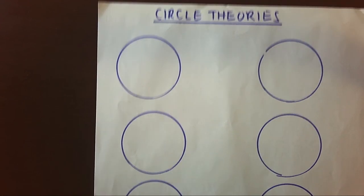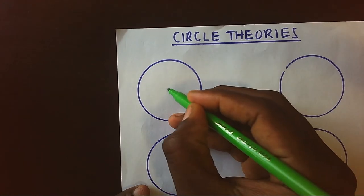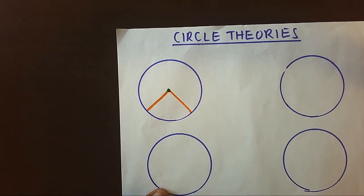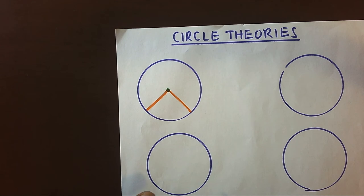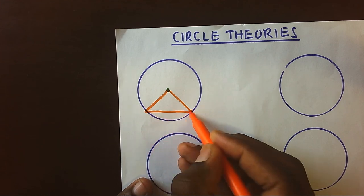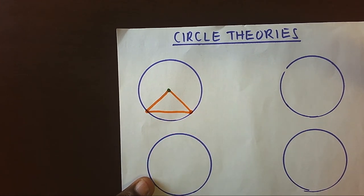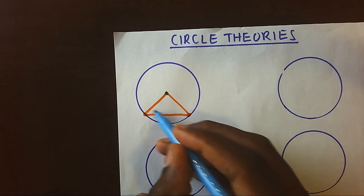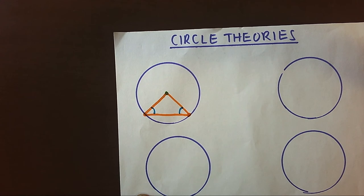Now let's look at a few circle theorems. First and foremost, any two radiuses will be equal. If these radiuses are joined by a chord, we shall always form an isosceles triangle. Whenever we form an isosceles triangle, it will always mean these two opposite angles will always be equal.